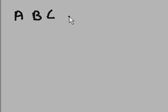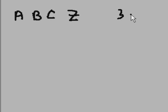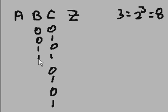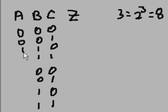Step number one: we need a table. So let's make a table of inputs and outputs. We have three inputs — A, B, and C — and output Z. Three inputs translates into two to the third, which is eight input combinations: 0,0,0 / 0,0,1 / 0,1,0 / 0,1,1 / 1,0,0 / 1,0,1 / 1,1,0 / 1,1,1.